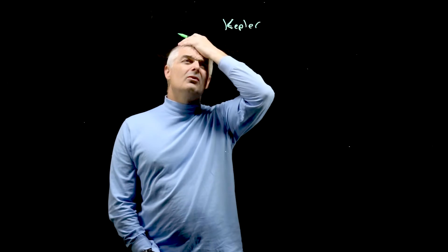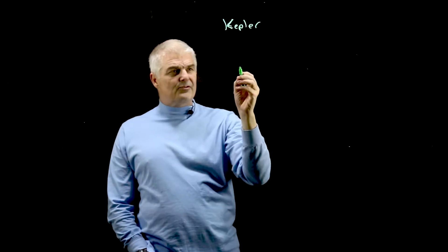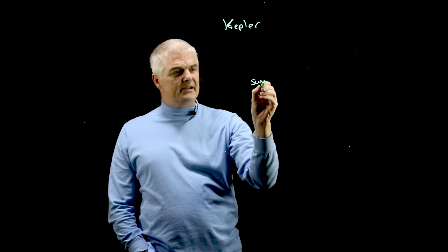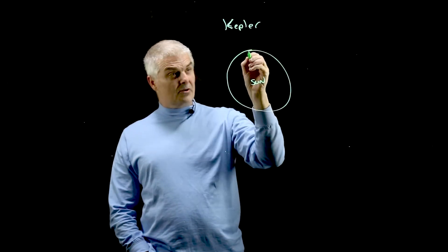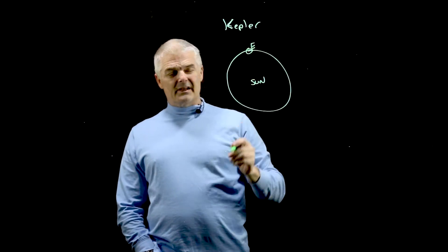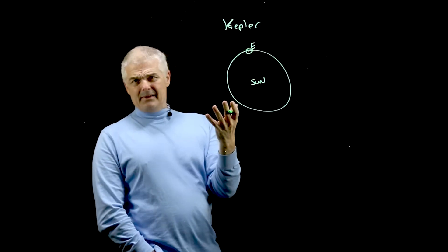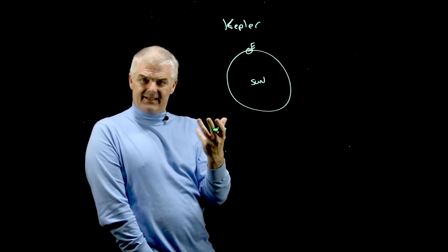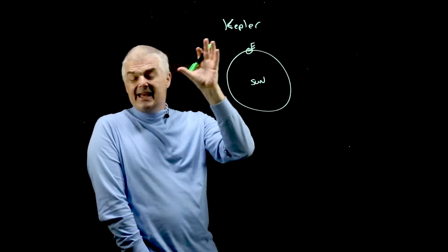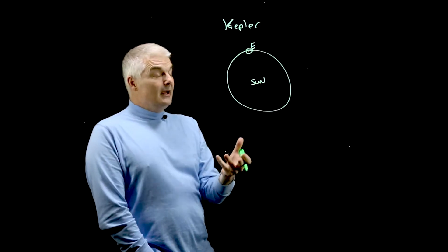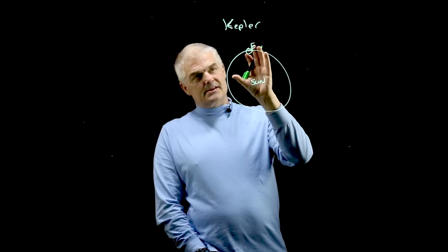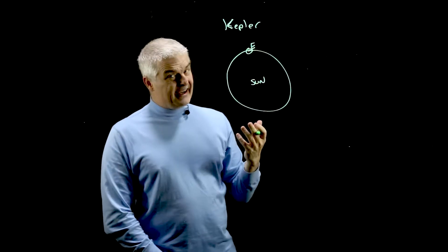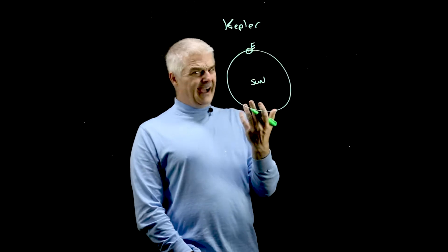And he said, how does it go around? Because what it was thought was if this was the sun, then the earth went around in a perfectly circular orbit. But Kepler wasn't happy with that. You know why he wasn't happy? It wasn't perfect. He was the guy who wanted perfect numbers. Because his buddy, or his mentor really, Brahe, said the numbers don't add up.